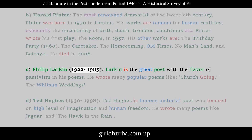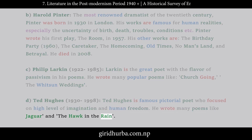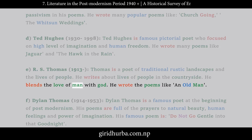C. Philip Larkin (1922–1985): Larkin is a great poet with the flavor of passivism in his poems. He wrote many popular poems like Church Going and The Whitsun Weddings. D. Ted Hughes (1930–1998): Ted Hughes is a famous pictorial poet who focused on a high level of imagination and human freedom. He wrote many poems like Jaguar and At the Hawk in the Rain. E. R.S. Thomas (1913–): Thomas is a poet of traditional rustic landscapes and the lives of people. He writes about lives of people in the countryside, blending the love of man with God. He wrote poems like An Old Man.